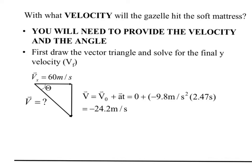Now what if we added an extra part of this question? With what velocity would the gazelle hit the soft mattress? Let's say we have to make sure we get the right mattress to make sure he's comfy in there. If he falls too fast we might need a better mattress for it. For this you want to provide the velocity it hits and the angle. Angle matters too in terms of maybe where you want to place your mattress. So you want to draw a vector triangle and solve for the final Y velocity.